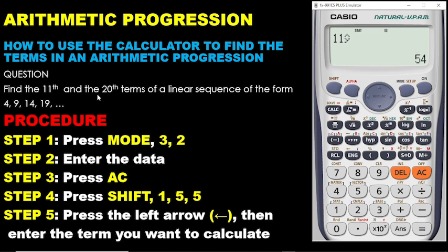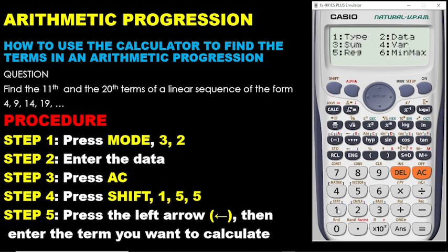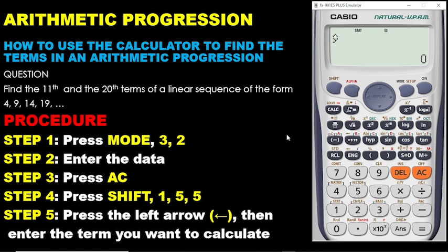The question also asks us to find the 20th term. The data you already entered is still stored. To get the 20th term, repeat step 4: press Shift, then 1, then 5, then 5 again. Move the cursor to the left-hand side, enter the number 20, then press equal. That gives you your answer. So the 11th term and the 20th term of this sequence have now been found.